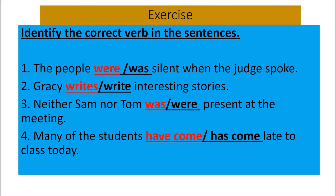Now let's identify the correct verb in the sentences — the correct answer is highlighted in red. 'The people were silent when the judge spoke.' People is a plural subject, so we use 'were.' If in place of 'the people' it were 'he,' it would be 'he was.' But people is plural, so it's 'were.'